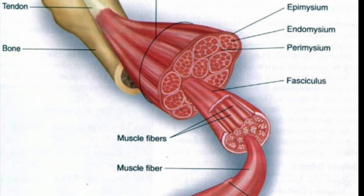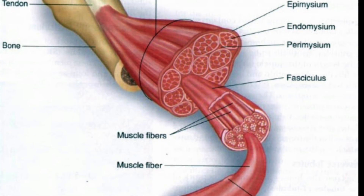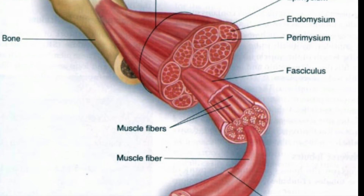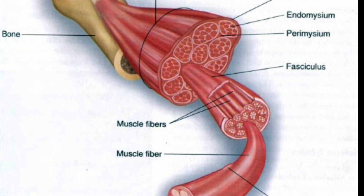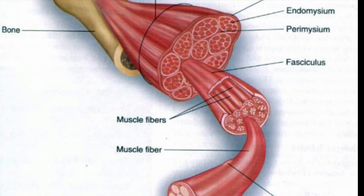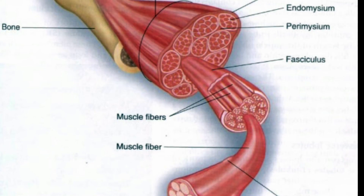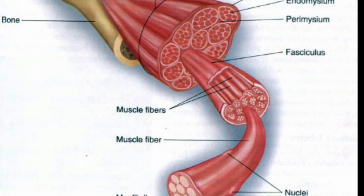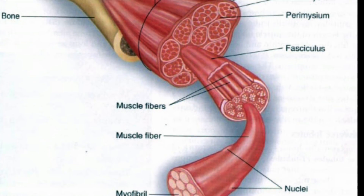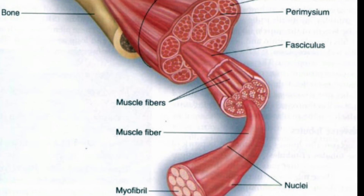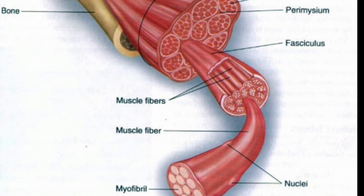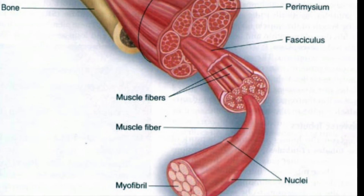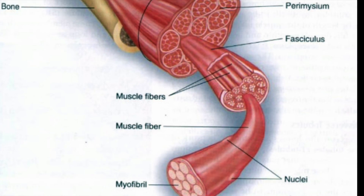Let's talk about the anatomy of skeletal muscle. We have the entire muscle belly, which is surrounded by epimysium — connective tissue that surrounds the entire muscle. The muscle is then broken down into layers. What makes up the muscle belly are fasciculi, which are surrounded by perimysium — again, connective tissue. The fasciculi then consist of muscle fibers, or muscle cells, and each muscle cell is surrounded by endomysium.